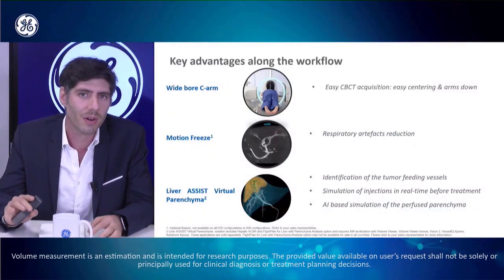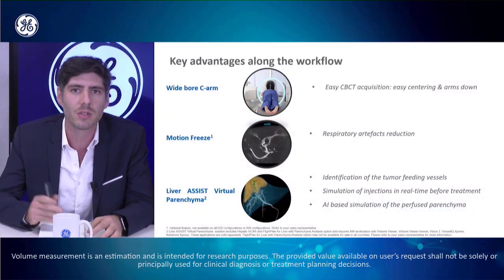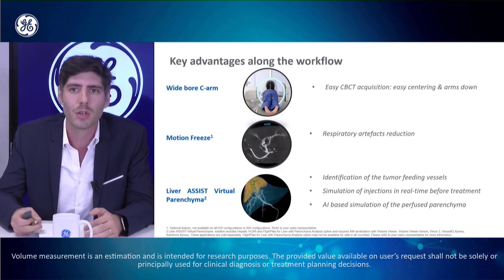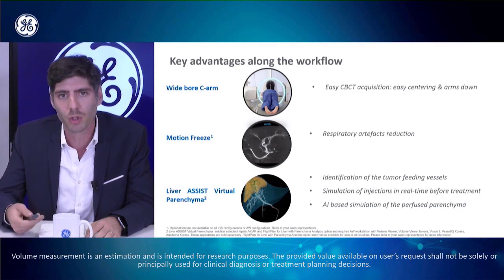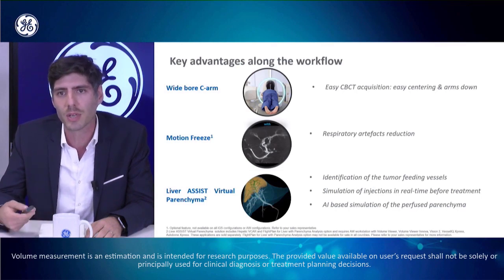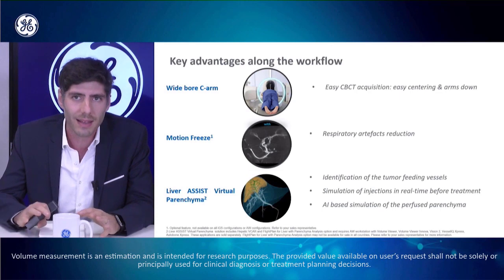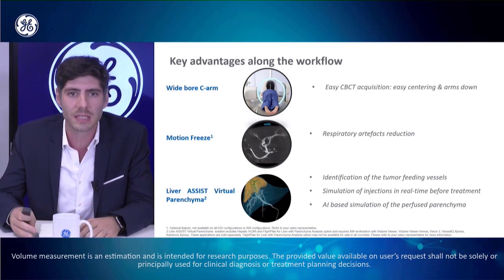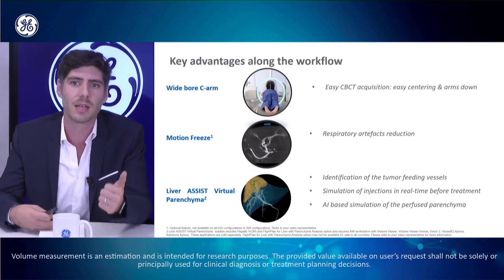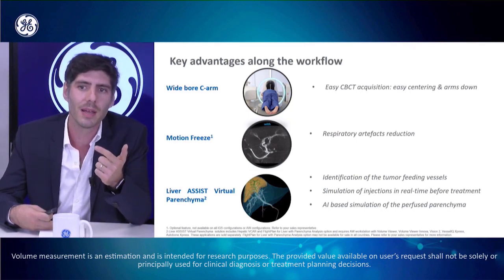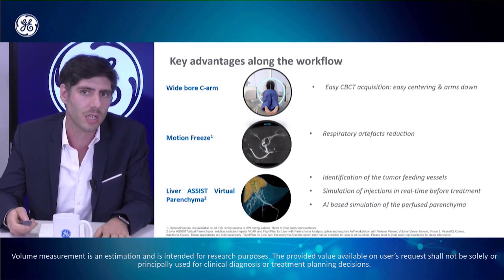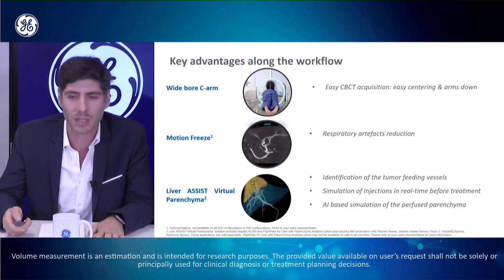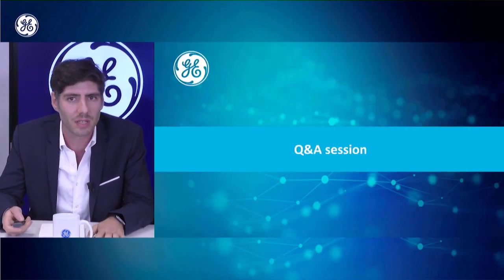In summary, by using this workflow with a white bore C-arm you can easily perform CBCT acquisitions, use Motion Freeze to reduce respiratory artifacts, and take full advantage of Liver Assist Virtual Parenchyma to identify vessels, simulate injection points in real time, and evaluate the parenchyma that will be affected by your injection. This is how we perform liver intra-arterial procedures today.